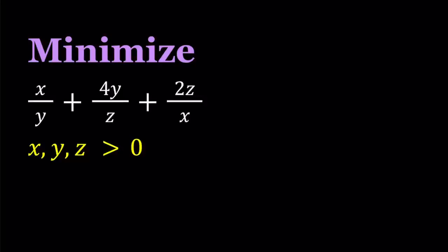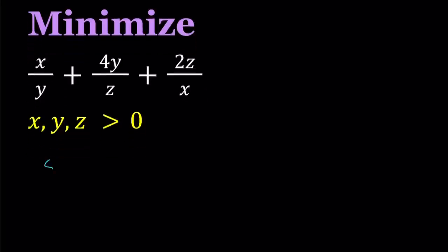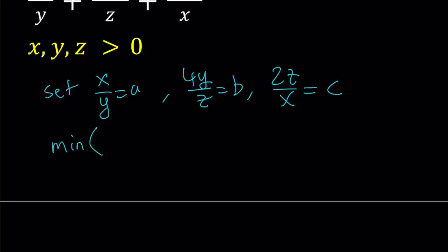Let's solve this by using substitution. I'm also going to be using a method that's commonly used with inequalities. To minimize this expression, I'm going to use inequalities, and then at the end, I'm going to prove that the value we get is also attainable. So let's set x over y equal to a, 4y over z equal to b, and 2z over x equal to c, so that the expression we're trying to minimize is as easy as a plus b plus c.